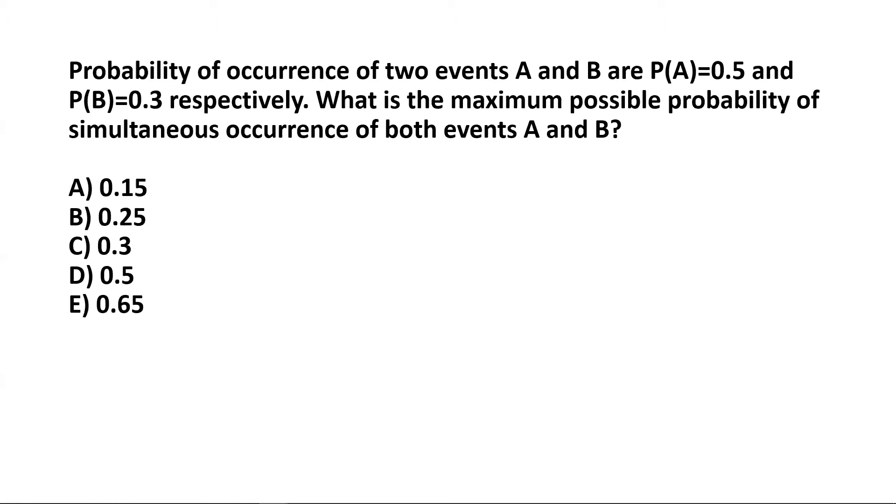It's given that probability of occurrence of two events A and B are P(A) equal to 0.5 and P(B) equal to 0.3 respectively. What is the maximum possible probability of simultaneous occurrence of both events A and B?